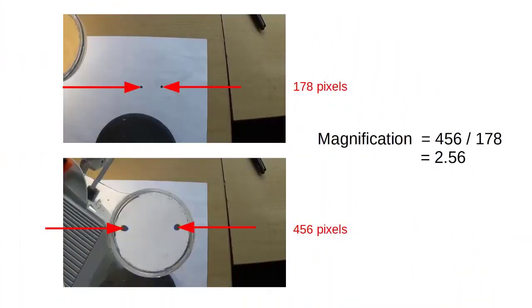Here we are. So without the magnifier our two dots are 178 pixels apart. With the magnifier they're 456 pixels apart. So our magnification comes out at 2.56 which is probably nearer what I'm aiming for.